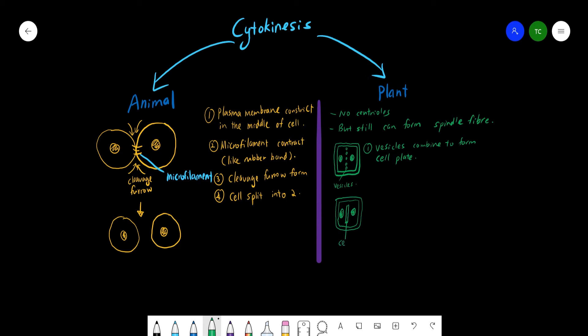The cell plate will be situated in between the two cells. After that, the cell plate will actually expand, and then two nuclei and in between is the cell plate. Next will be the formation of the cell wall.